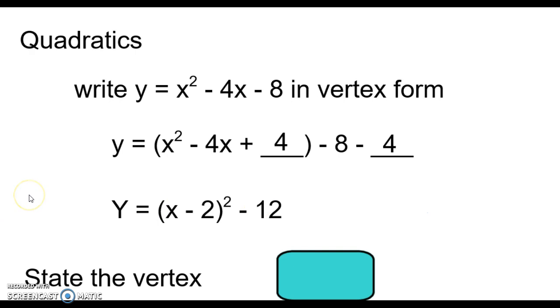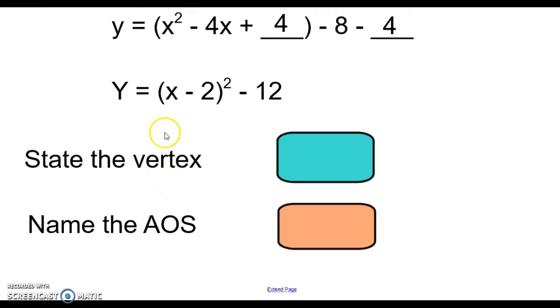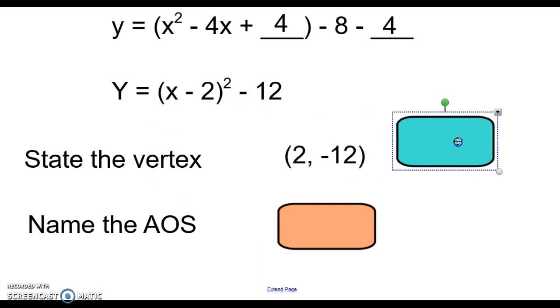Once we have something in vertex form, it makes it a lot easier for the vertex. So, can you state the vertex given this equation of the parabola? Well, your vertex is (2, -12).